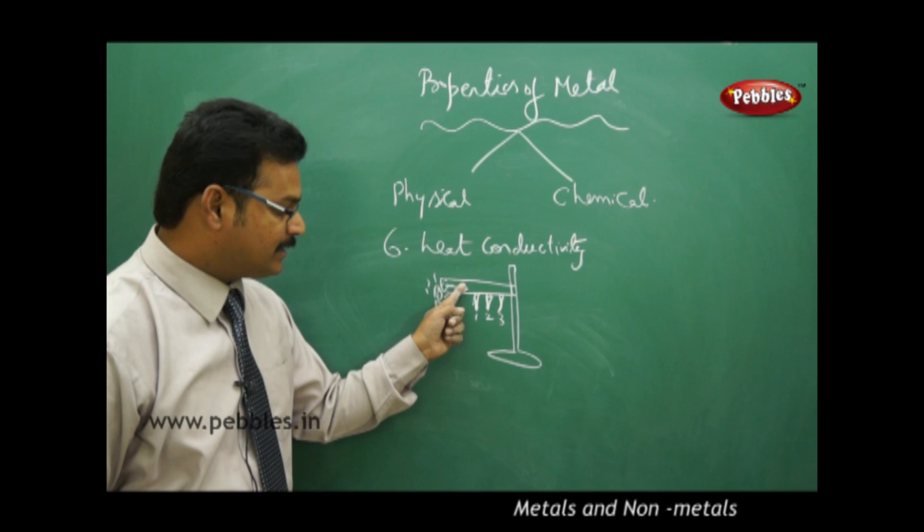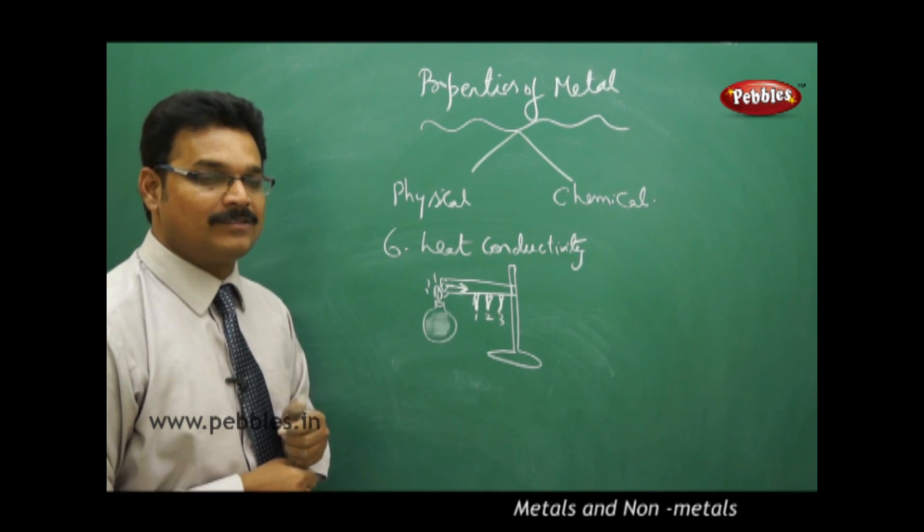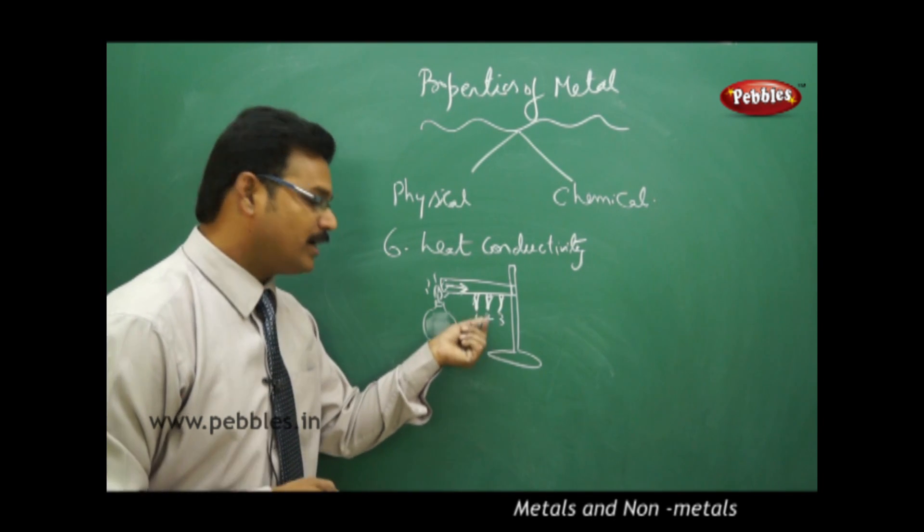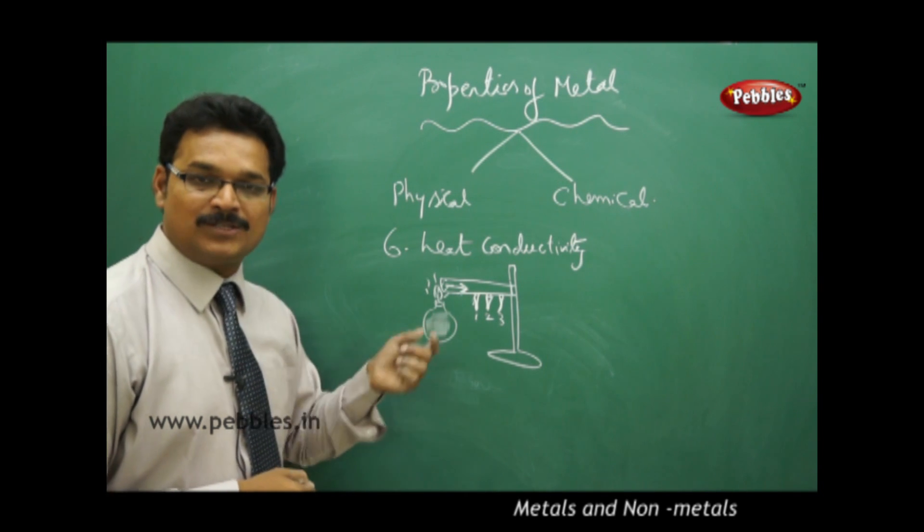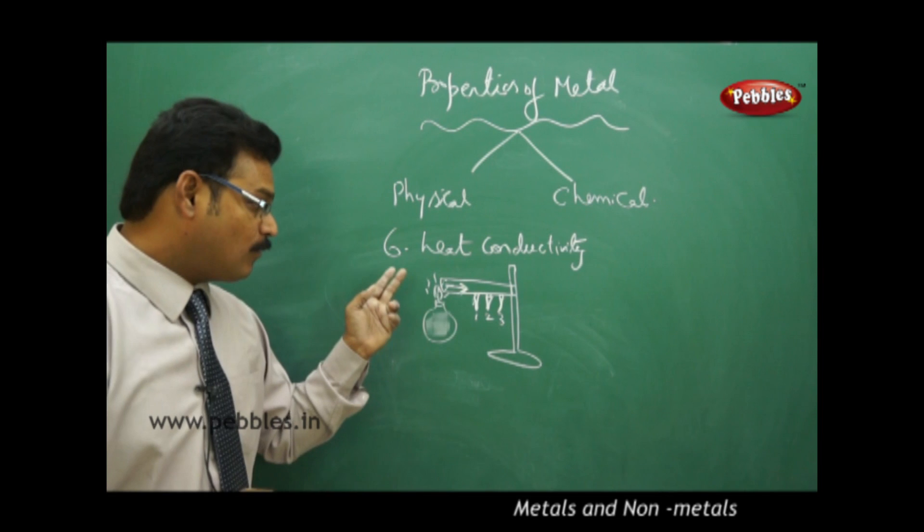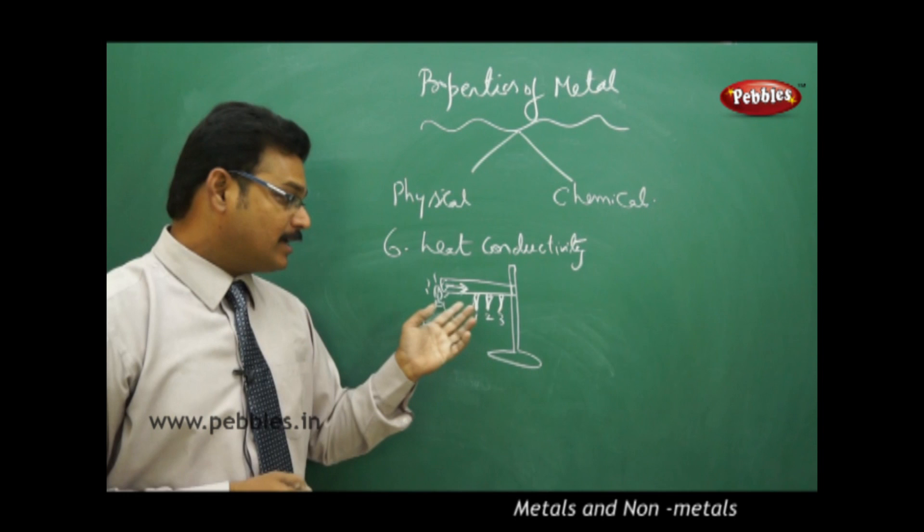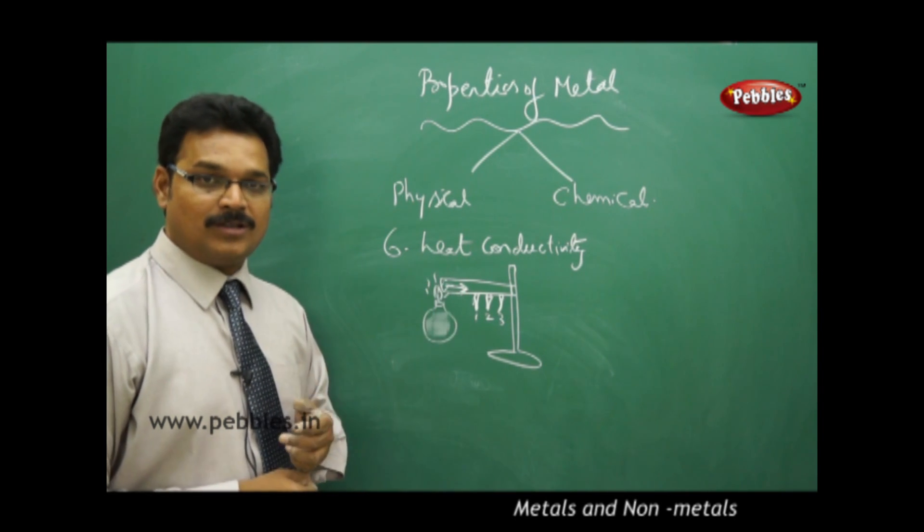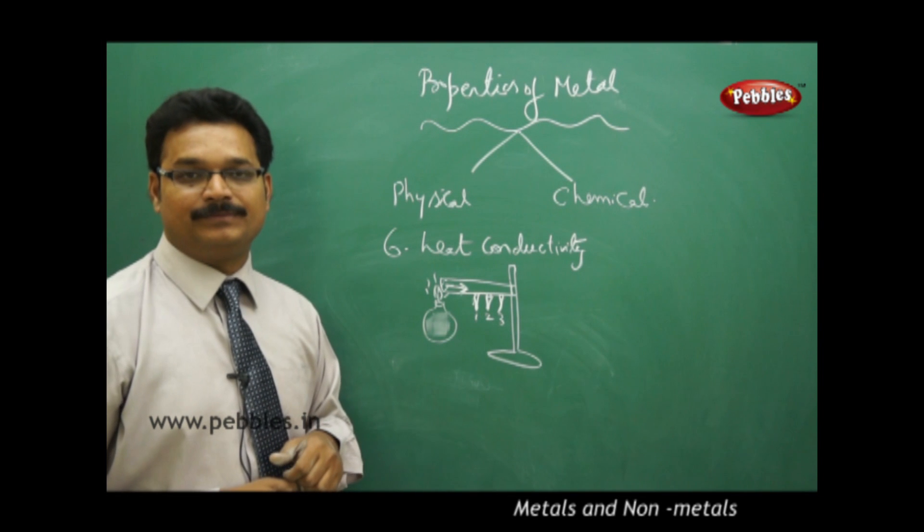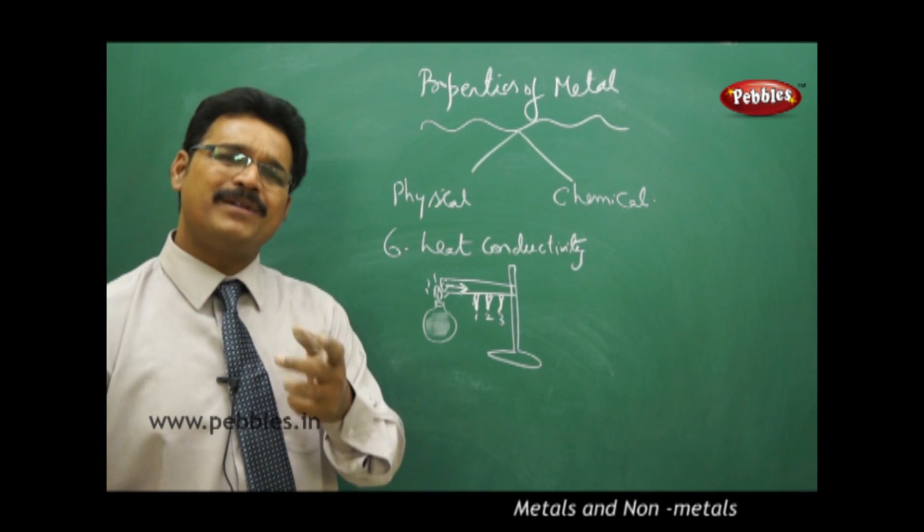as the heat is flowing in this direction, first the heat makes the wax melt, therefore pin 1 falls, and similarly pin 2 and pin 3. So that small demonstration explains that yes, heat can flow from one end to the other end. In which direction heat is flowing, in that direction only the temperature change or pin falling can be observed. Heat conductivity is not only for iron rod, it's for all metals.